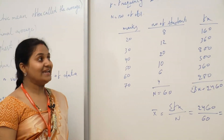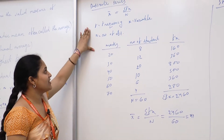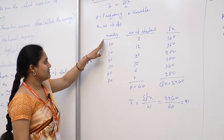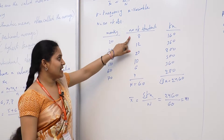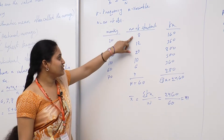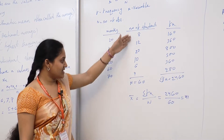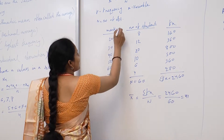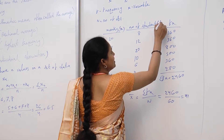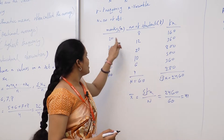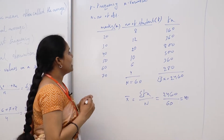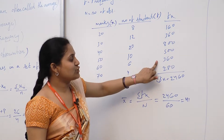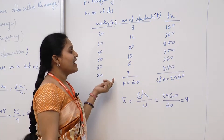For discrete data, the formula for the mean is x̄ = Σfx / n, where f is the frequency, x is the variable, and n is the number of observations. In this example, marks are 20, 30, 40, 50, 60, and 70, and the corresponding number of students are the frequencies. We calculate fx: 20×8 = 160, 30×12 = 360, 40×20 = 800, and similarly for the rest. The summation of fx is 2460 and the total frequency n = 60, so x̄ = 2460 / 60 = 41.